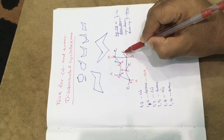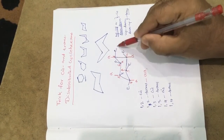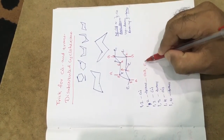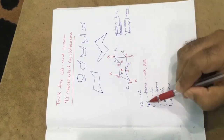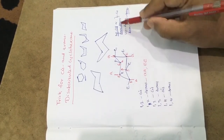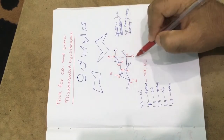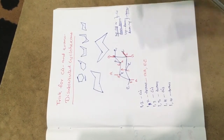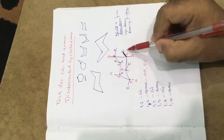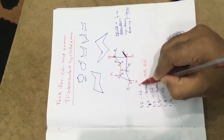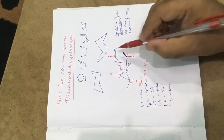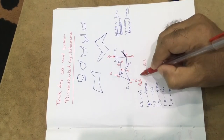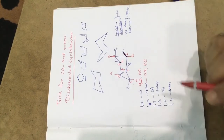For the 1,2-cis form: axial up and equatorial up — same direction, up and up — that is cis. So axial-equatorial gives cis for the 1,2 position. Also, equatorial down and axial down — down and down — that is also cis. So for 1,2: axial-axial and equatorial-equatorial are trans; axial-equatorial and equatorial-axial are cis.